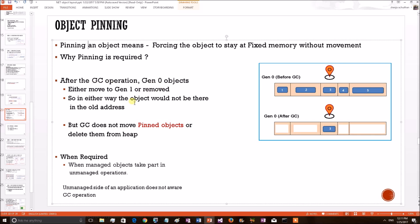So in either way, the .NET objects which were situated at Gen0 will not be there at their old addresses because they are either moved or picked. But if you make a specific object as pinned, then GC will not collect or move that object from that generation region.